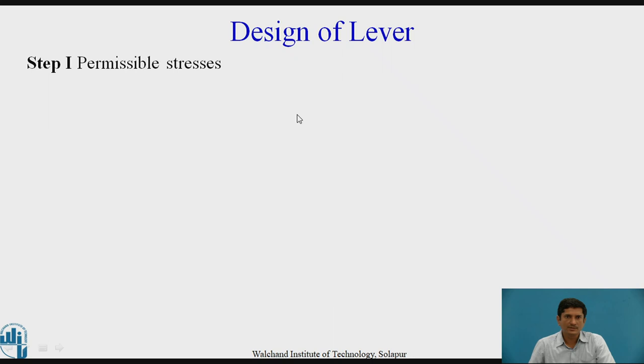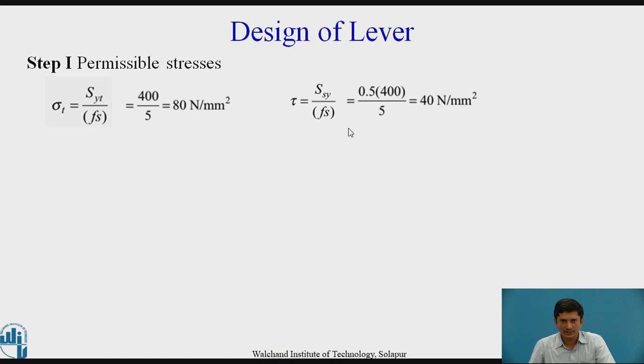Let us first find out the permissible stresses in the lever. We need to calculate the bending stress sigma T equals SYT upon FS. SYT is given as 400 and factor of safety is 5. We can calculate permissible stress 80 N per mm square. Then, the tau value, we know that tau is given by SSY upon FS or it is 0.5 SYT upon FS. As per the maximum shear stress theory, we can calculate permissible shear stress equals 40 N per mm square.